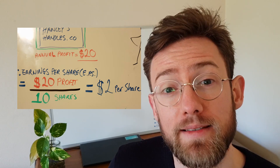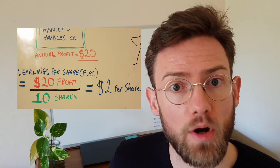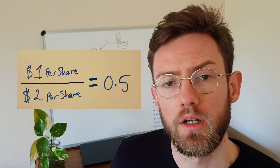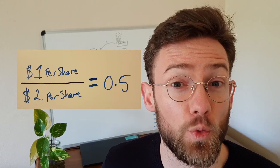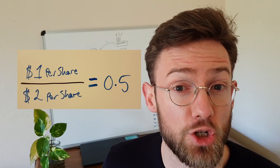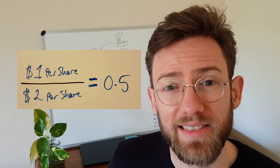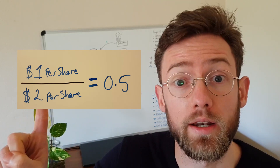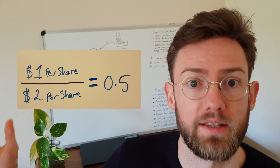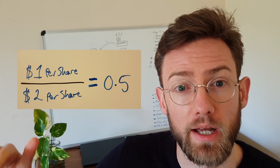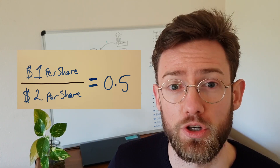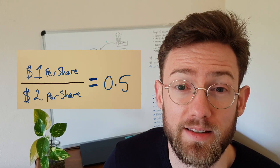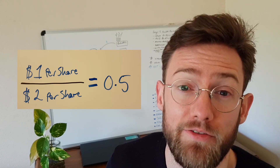That means that if the price of a share is currently $1, the price to earnings ratio is $1 divided by the earnings per share of $2, which means the price is currently half the earnings.